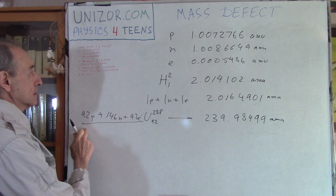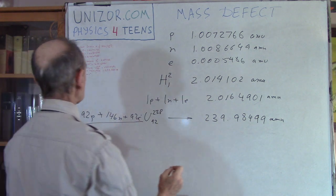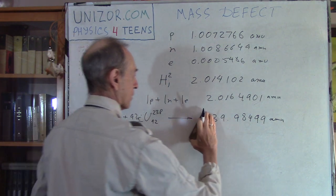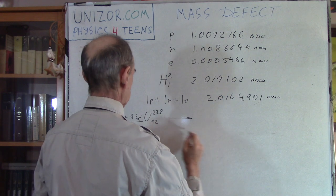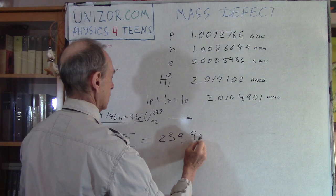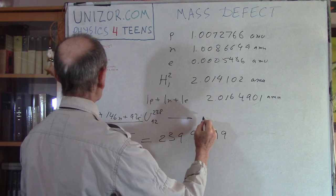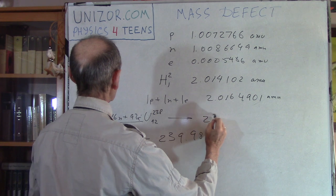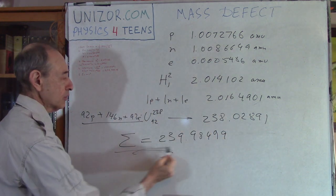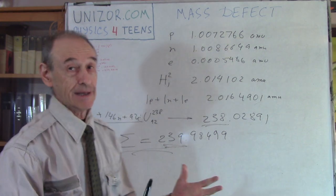The atomic mass of the atom of uranium is 238.02892. Now let's calculate this: 92 times this plus 146 times this plus 92 times this. And we will have 239.98499. So again, we have the sum of components 239 is greater than the atomic mass of the atom itself.